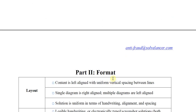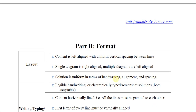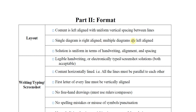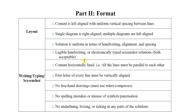Moving to Part 2, the format section, divided into layout, writing/typing/screenshot, and scanning. For layout: content is left aligned with uniform vertical spacing, a single diagram is right aligned, but if there are multiple diagrams — two, three, or more — the diagrams are left aligned. The solution must be uniform in terms of handwriting, alignment, and spacing. We will see these examples in a later stage.